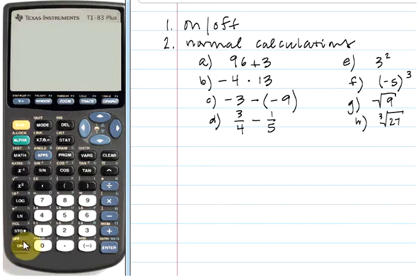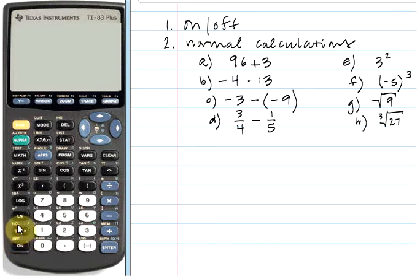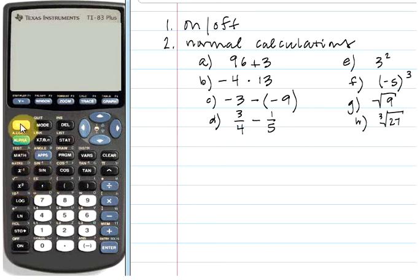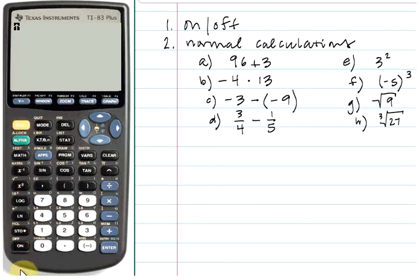To turn the calculator on, you'll notice an on button down here in the lower left-hand corner. To turn it off, notice there's a word 'off' in yellow right above the on key. Several buttons have these yellow commands located above them. To access those yellow commands, all you need to do is press the second key first and then the button. So to turn the calculator off, click the second button and then the on button, and that should turn your calculator off.